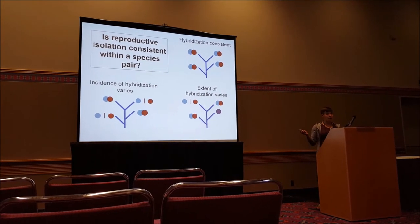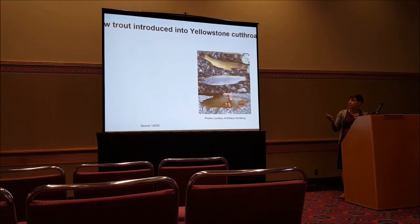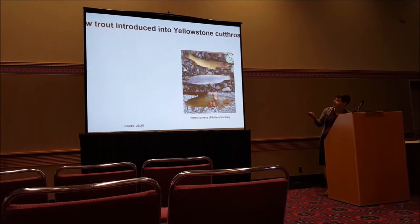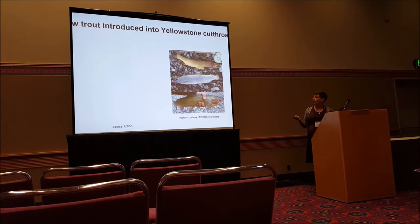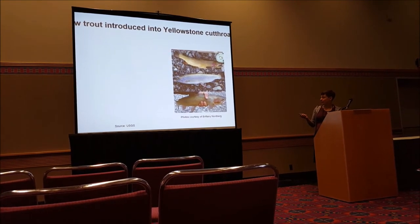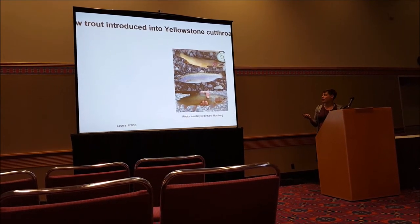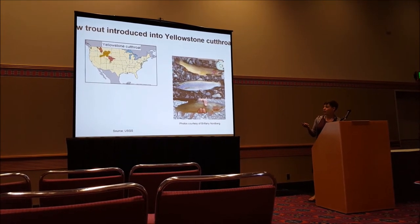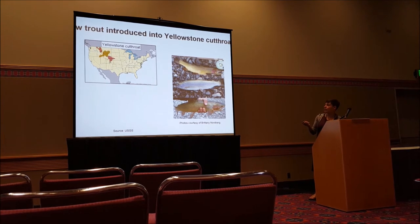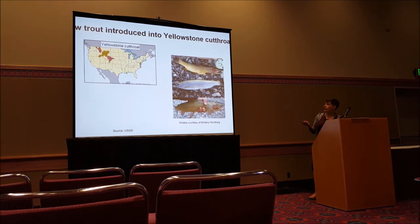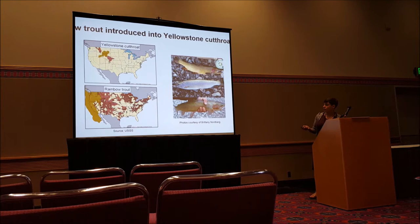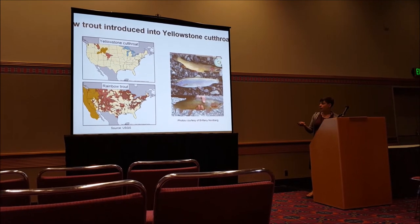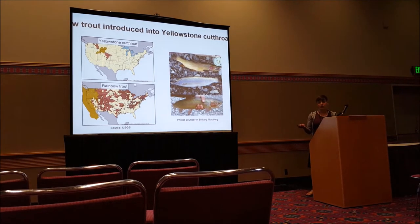Keep this framework in mind as we go through this talk. Rainbow trout have been introduced into the range of yellowstone cutthroat trout. If we look at this range map, yellowstone cutthroat is native only to this orange area, with the pink areas being where it's been introduced. Rainbow trout is only native to this yellow area on the west coast, but has been introduced across North America and across the world as well.